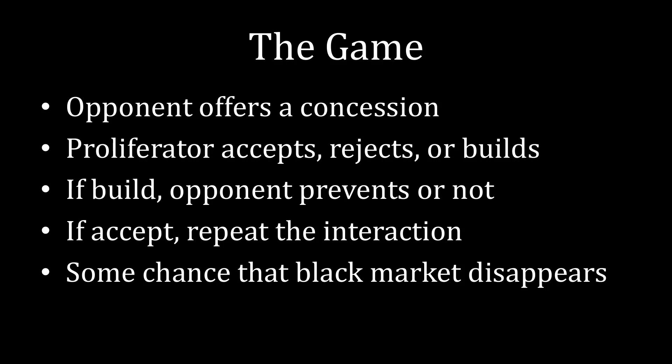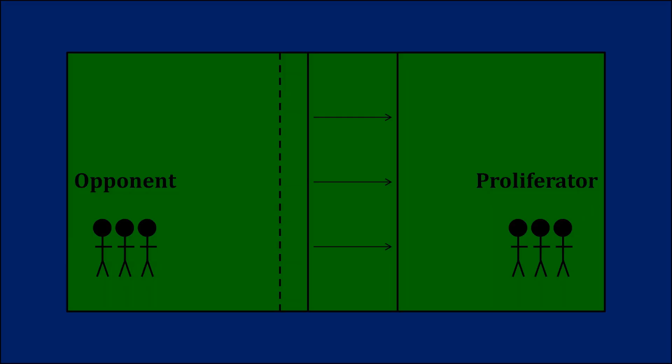To do that, we're going to make a couple of changes. First, if the potential proliferator accepts an agreement, it's not game-ending — that'll just be the share of the good in dispute for the time being. Afterward, they'll repeat the interaction the next day. In between acceptance and renegotiation, however, there's going to be some chance that the black market disappears. The effect of the black market disappearing is that the cost of nuclear weapons is cheaper when the black market is around, and more expensive when it disappears.